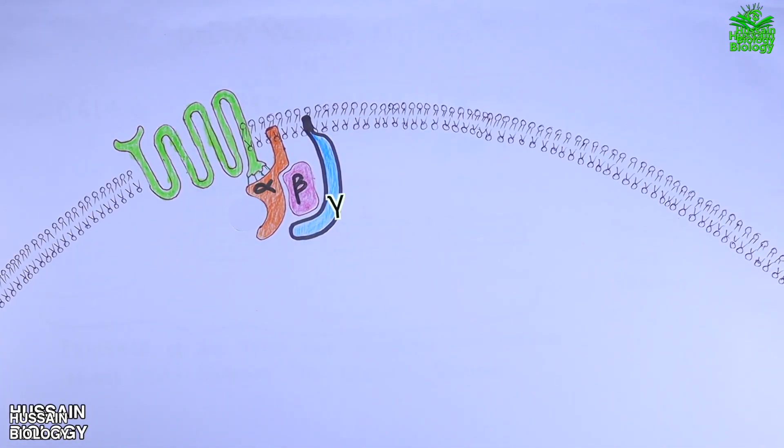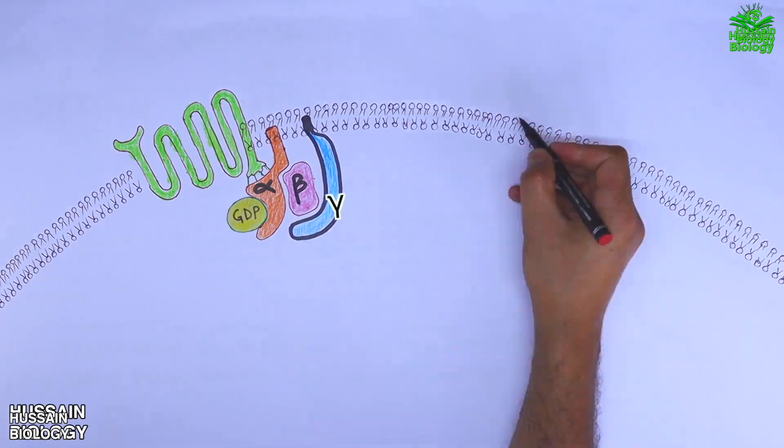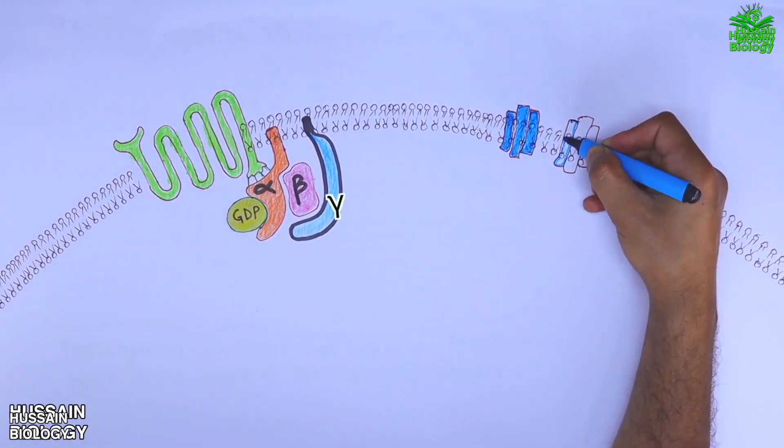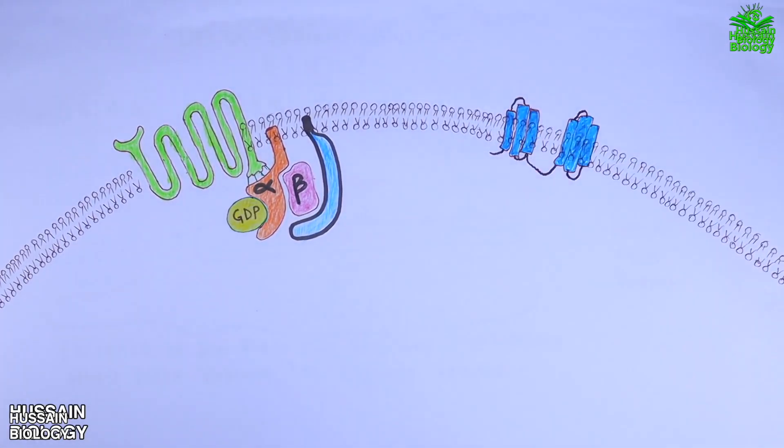Moreover, we can see the G alpha protein subunit is bound with GTP molecule, and on the right we have inactive adenylyl cyclase. So to drive the signaling pathway we need glucagon molecules first, and it's when we have lower blood glucose levels in the body. Specialized cells in the pancreas called alpha cells in the islets of Langerhans sense a drop in blood glucose levels and secrete glucagon.